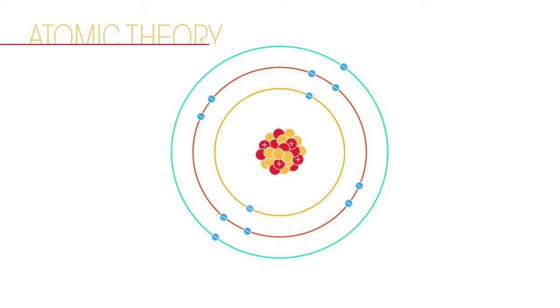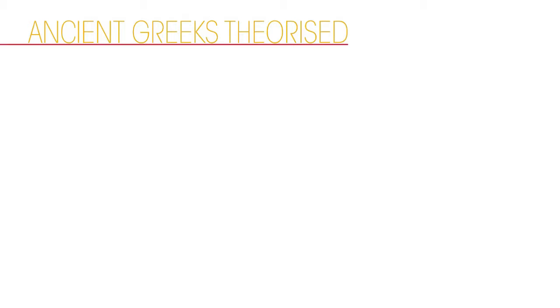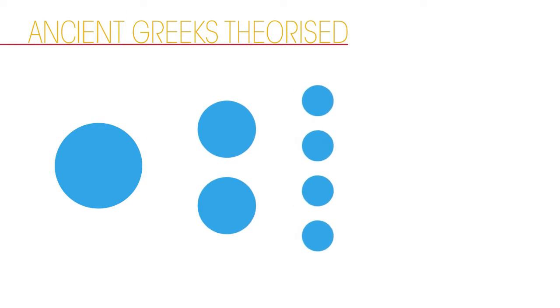Before we start, you should have a general idea of the structure of an atom, so you may want to watch this video first. The ancient Greeks theorized that all matter could be divided into smaller and smaller units until such a point that there would only be tiny particles left that could not be divided any further.